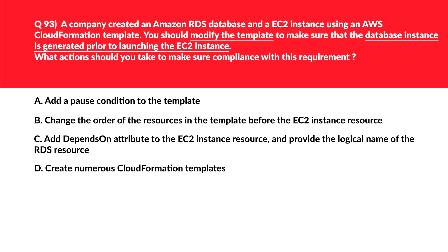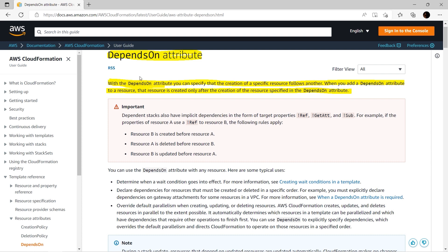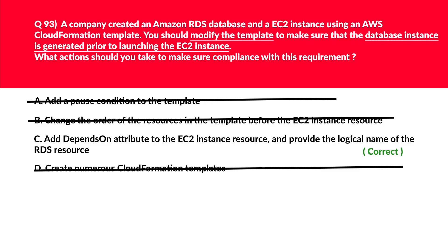We are at question number 93. The question demands creation of AWS resources in a particular order. Whenever there is a need to create a specific resource which follows another, the DependsOn attribute can help in achieving the task. Since option C contains the DependsOn attribute, we'll keep option C and reject the rest. As stated in the official documentation: with the DependsOn attribute, you can specify that the creation of a specific resource follows another. When you add a DependsOn attribute to a resource, that resource is created only after the creation of the resource specified in the DependsOn attribute. Hence, we'll log C as the correct answer.